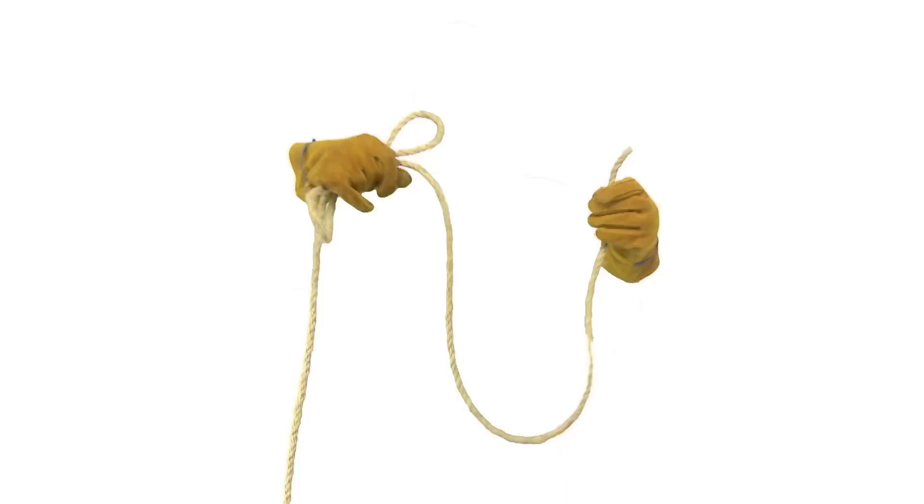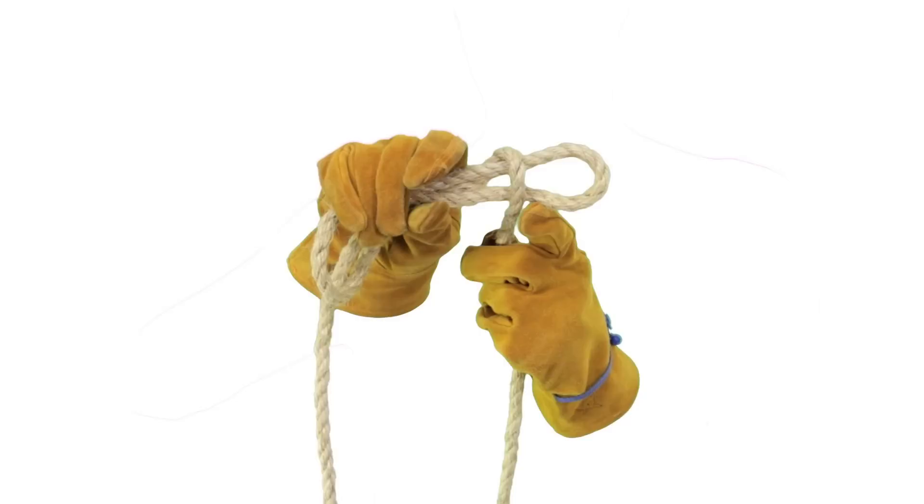Now, take the working end of the rope and wrap it around the three segments. This forms the first turn of the noose. Repeat this step, tightening the noose with each turn.